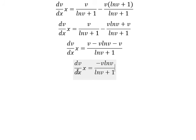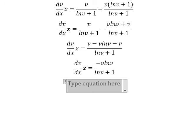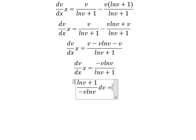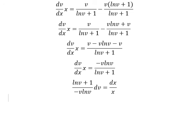Next, we put this expression on the left and the s terms on the right. So that should be LN v plus 1 over negative v·LN v, times dv, equals ds over s. Next, we integrate both sides.